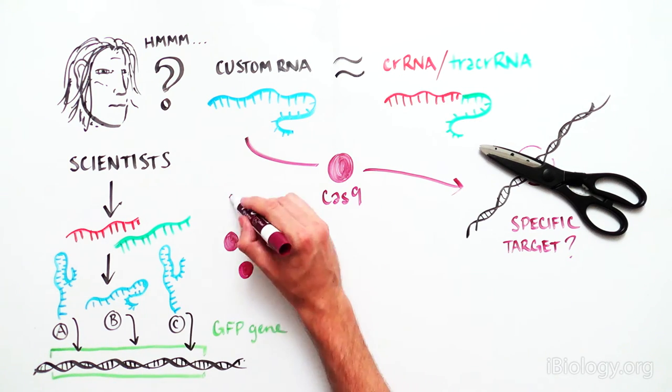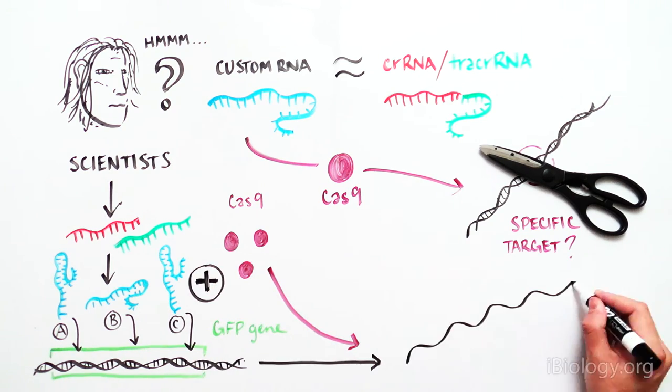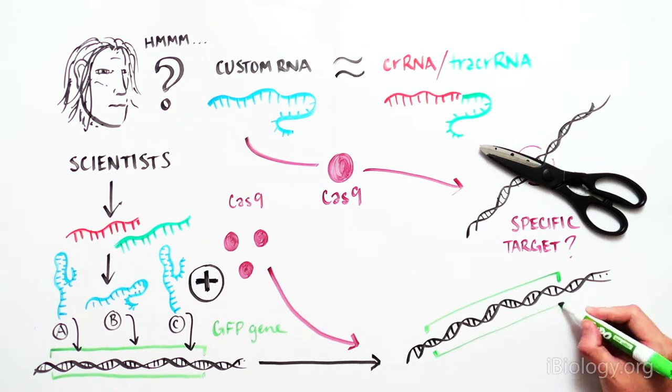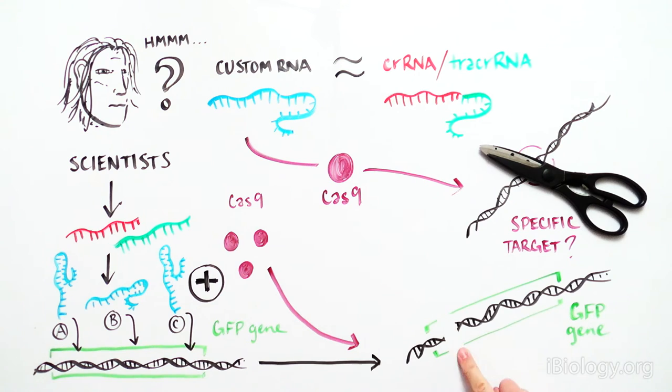They added the engineered RNA molecules to the GFP DNA sequence along with the Cas9 protein and asked whether Cas9 would cut GFP DNA at specific sequences. And it did!